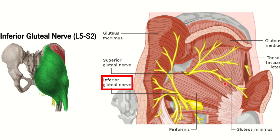Here we can see gluteus medius, and below it the gluteus minimus. In front is the tensor fascia latae, and here is the piriformis. The inferior gluteal nerve ascends and supplies the largest muscle of the hip area — the gluteus maximus. The root value of the inferior gluteal nerve is L5, S1, and S2.